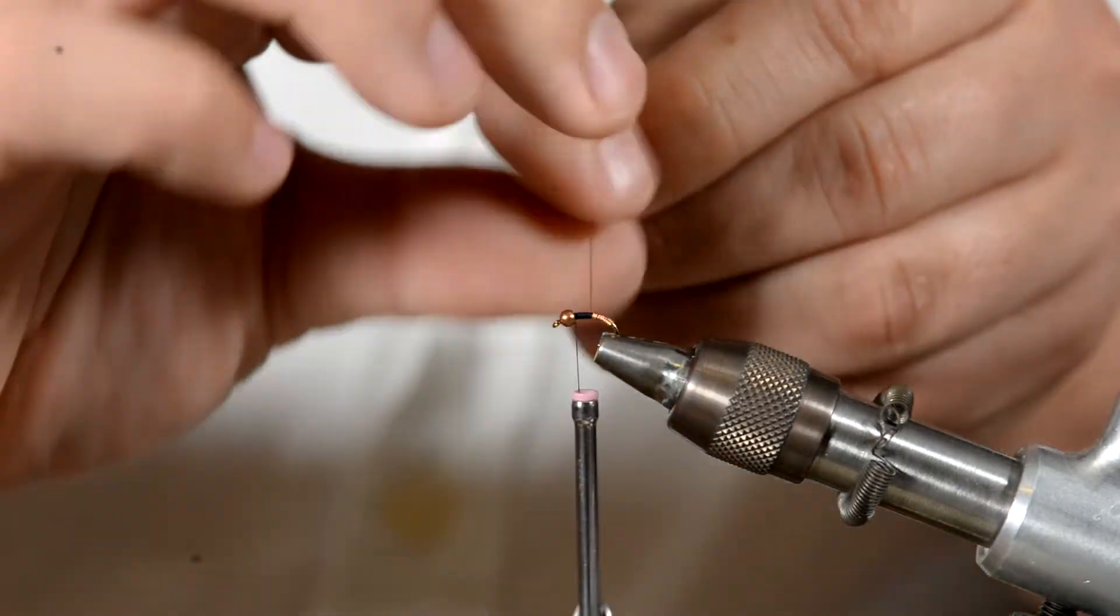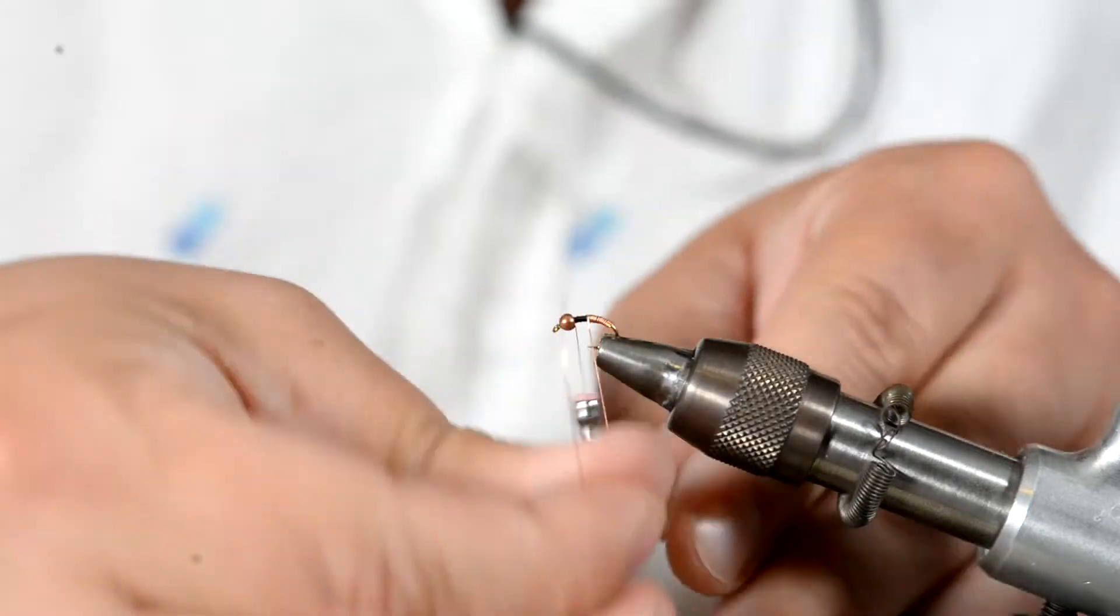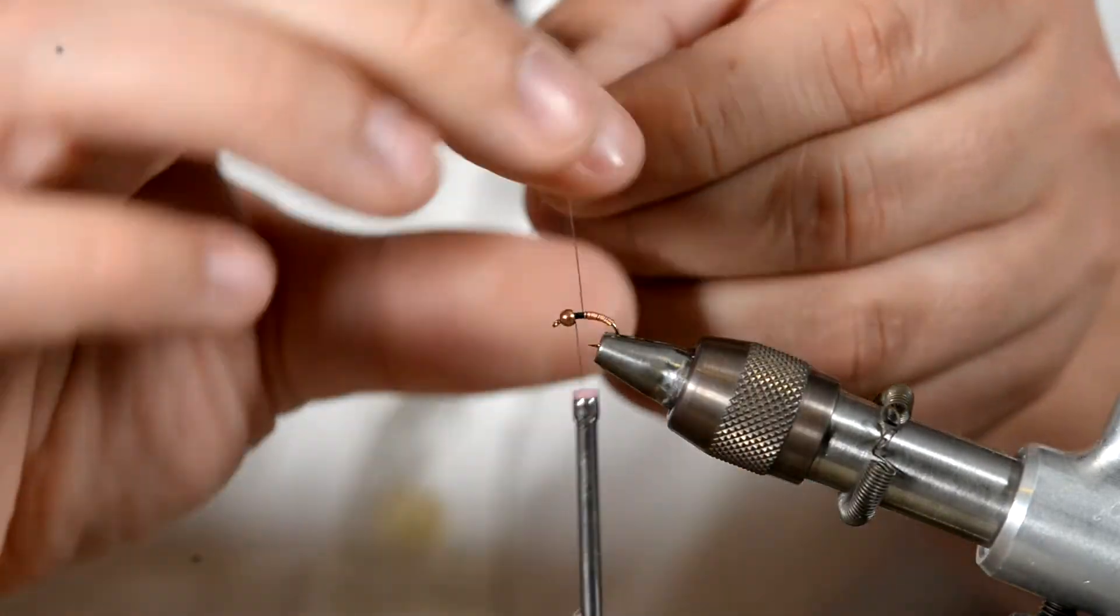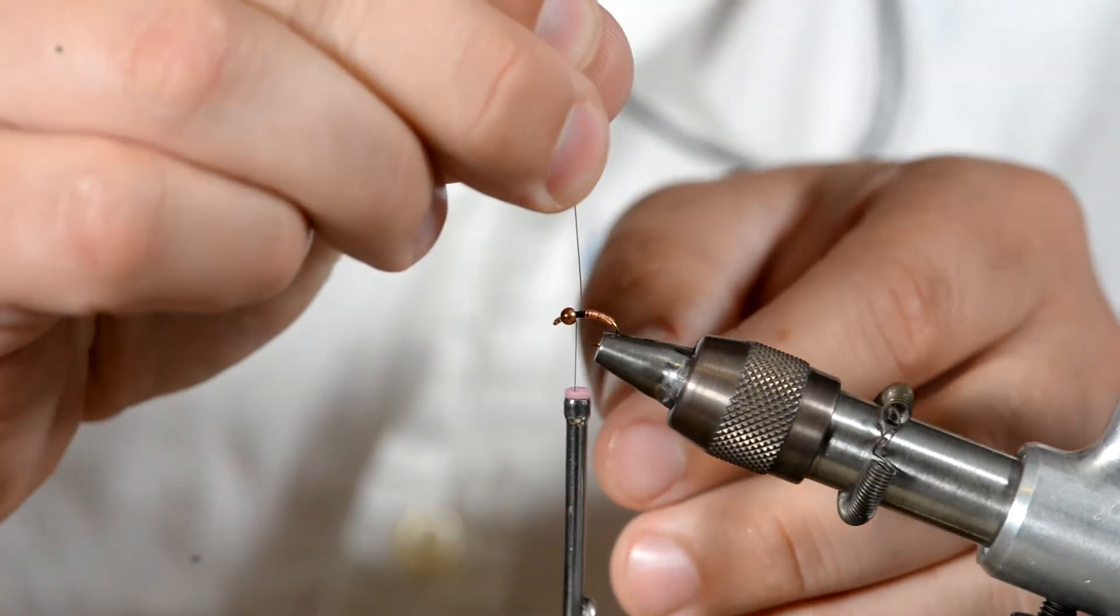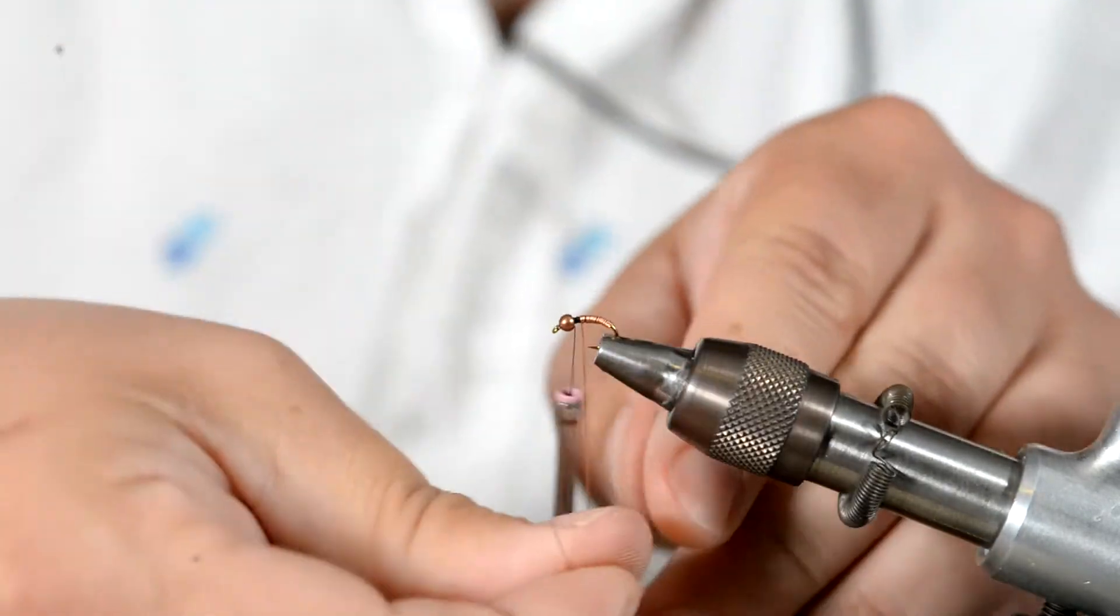So we're just gonna keep with the wire going forward. Now brassy wire is thicker than your normal ribbing wire. So that does tend to help a little bit in this process.